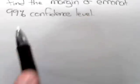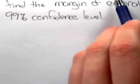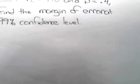If n, the sample size, is 490 and p hat, the sample proportion, is 0.4, find the margin of error at a 99% confidence level.